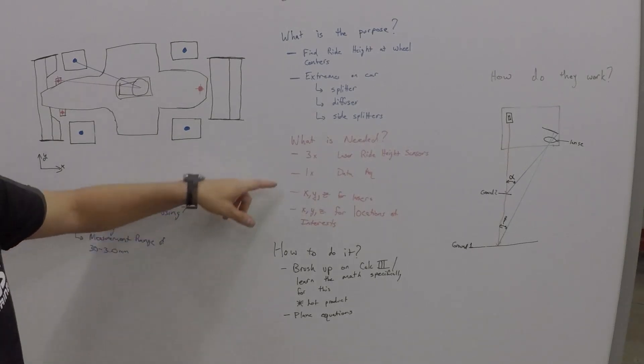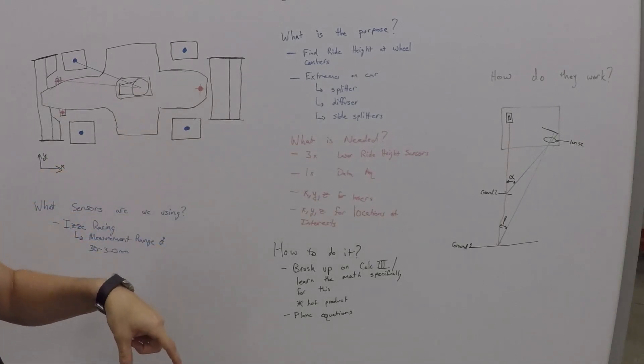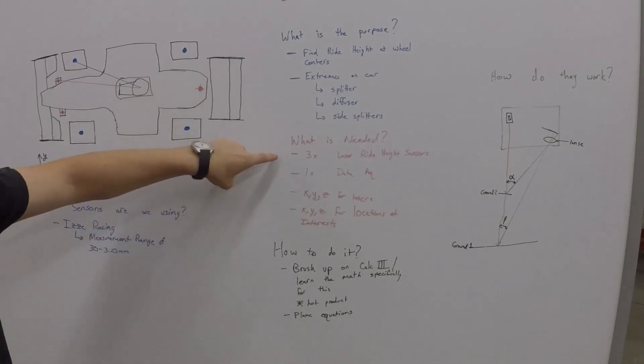What's needed? So you need three laser ride height sensors. The reason you need three is because you're actually making a plane. Three points make a plane. And from there, you can calculate any position on that plane you would like.